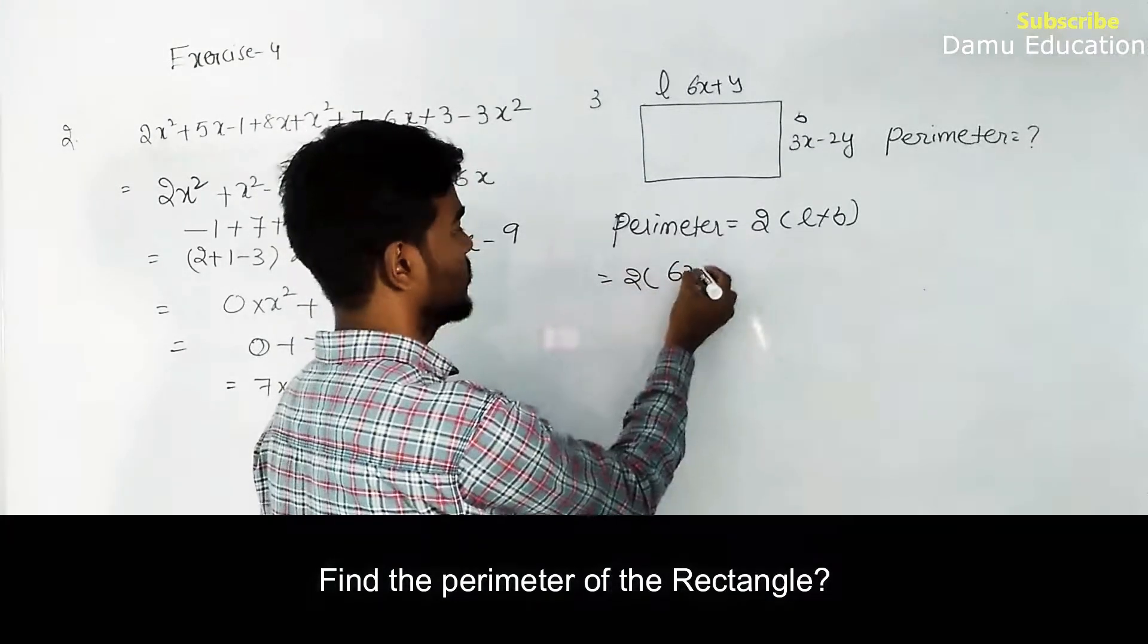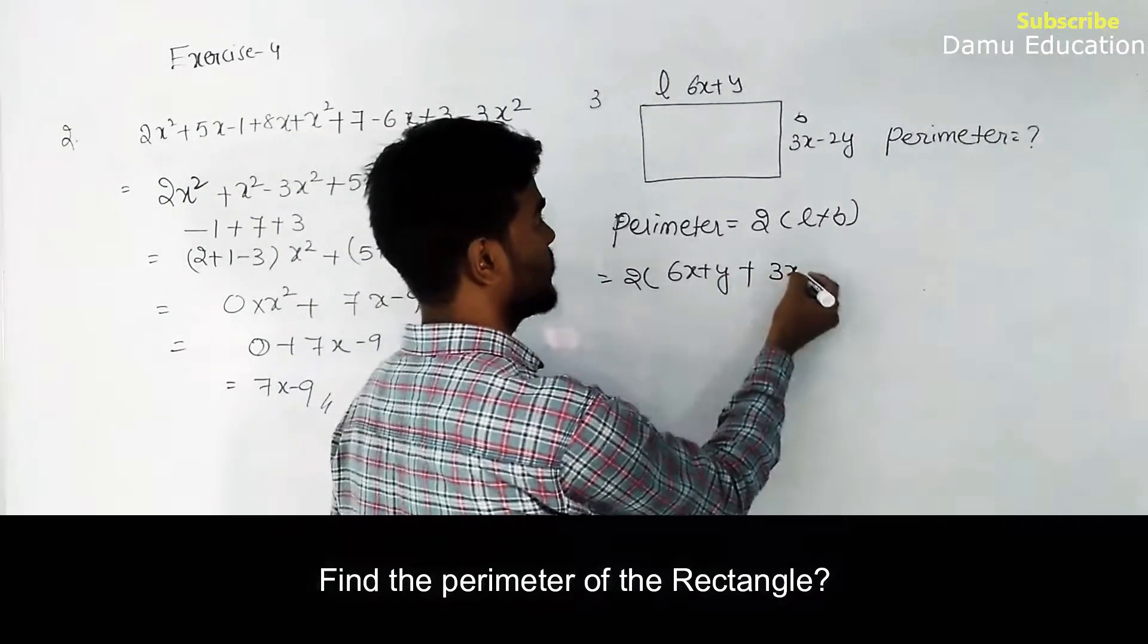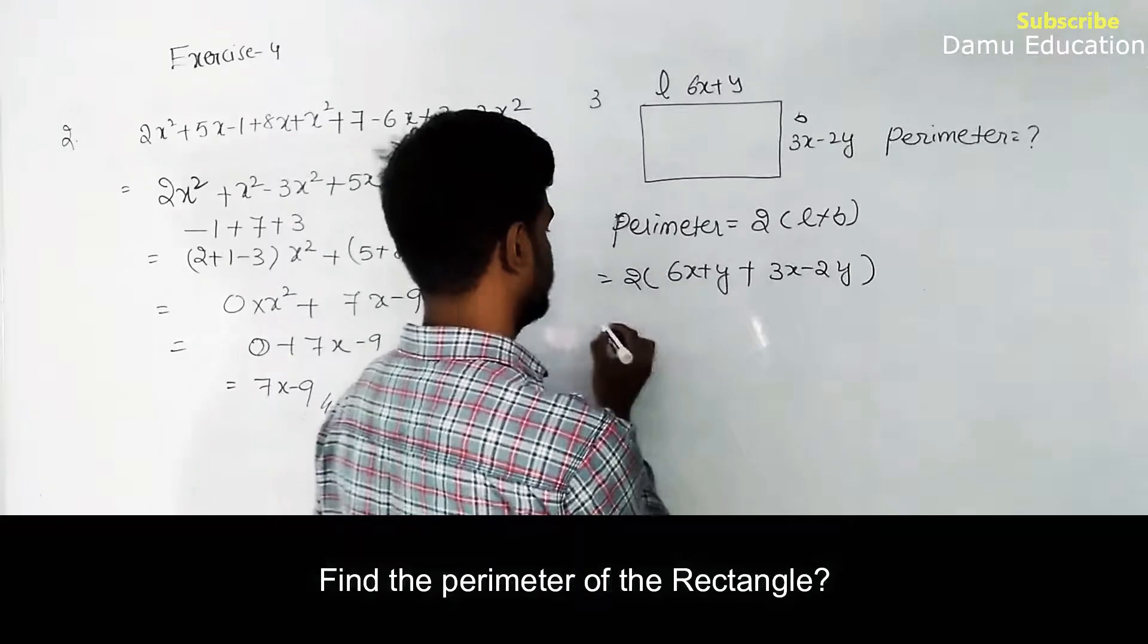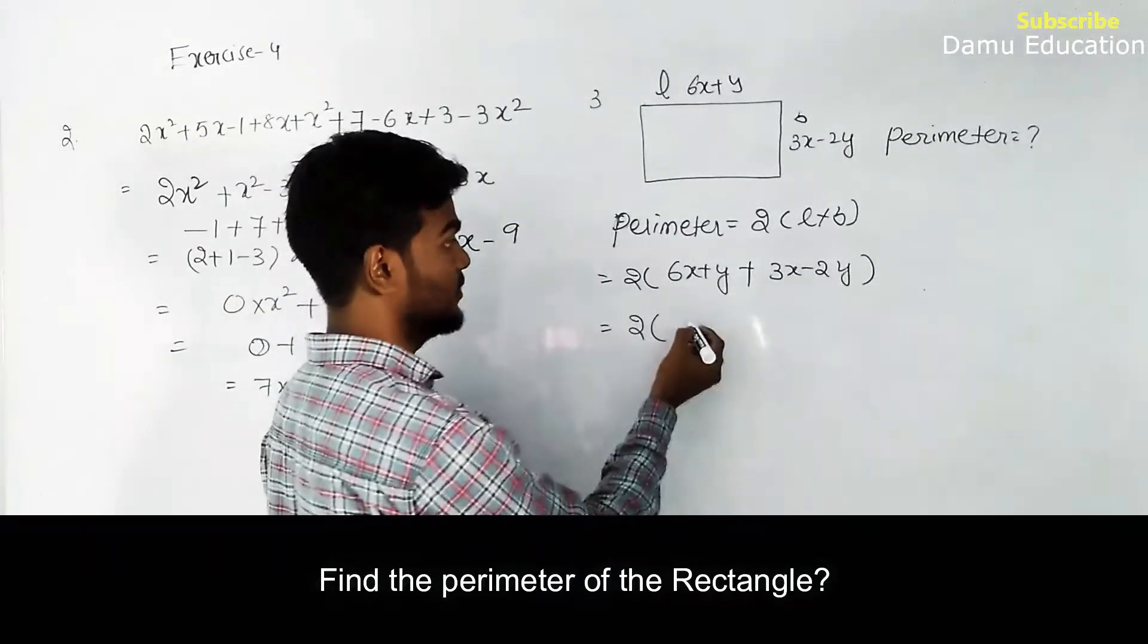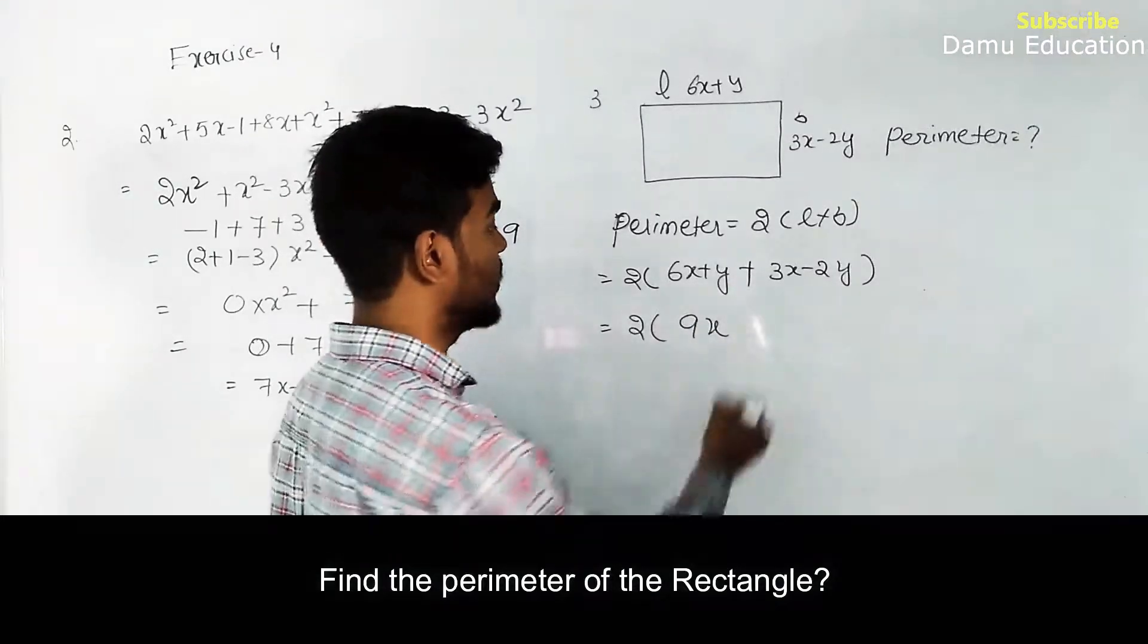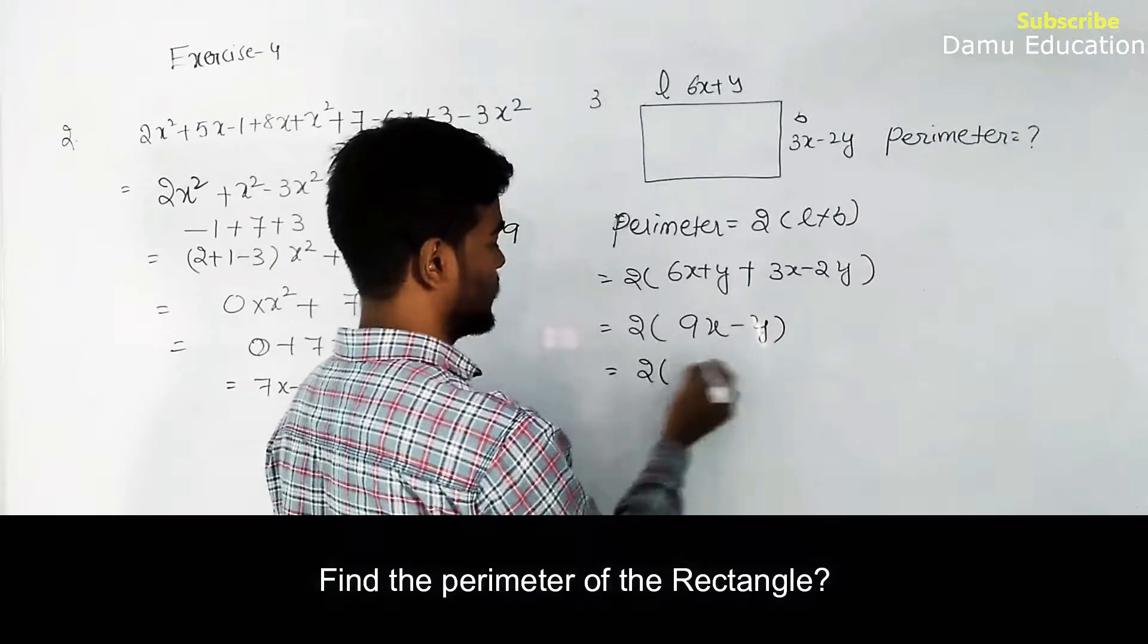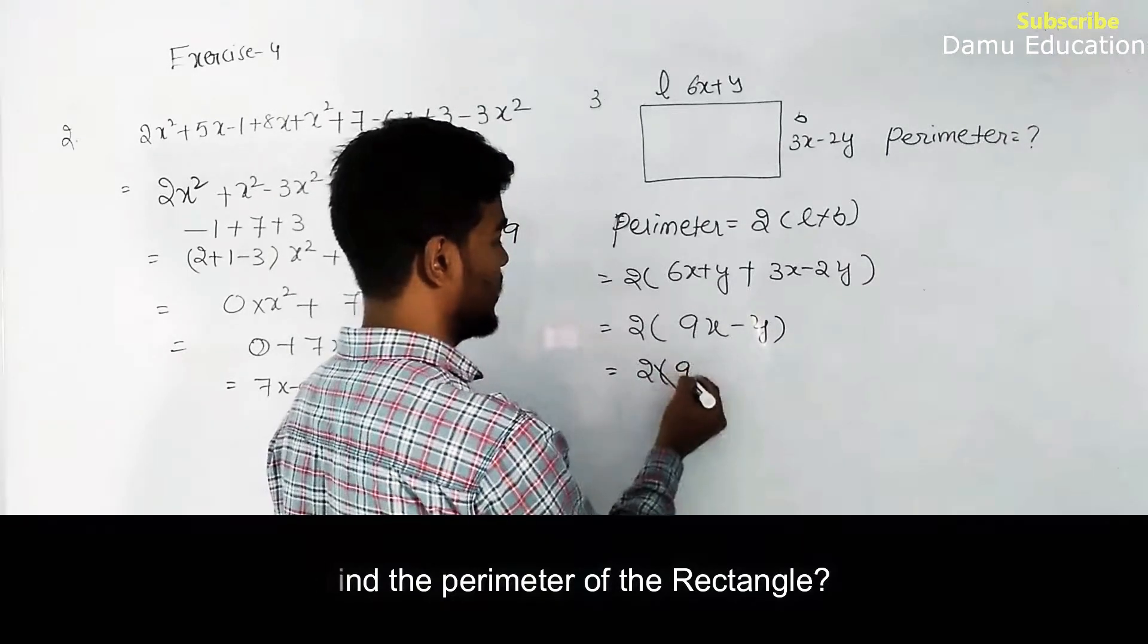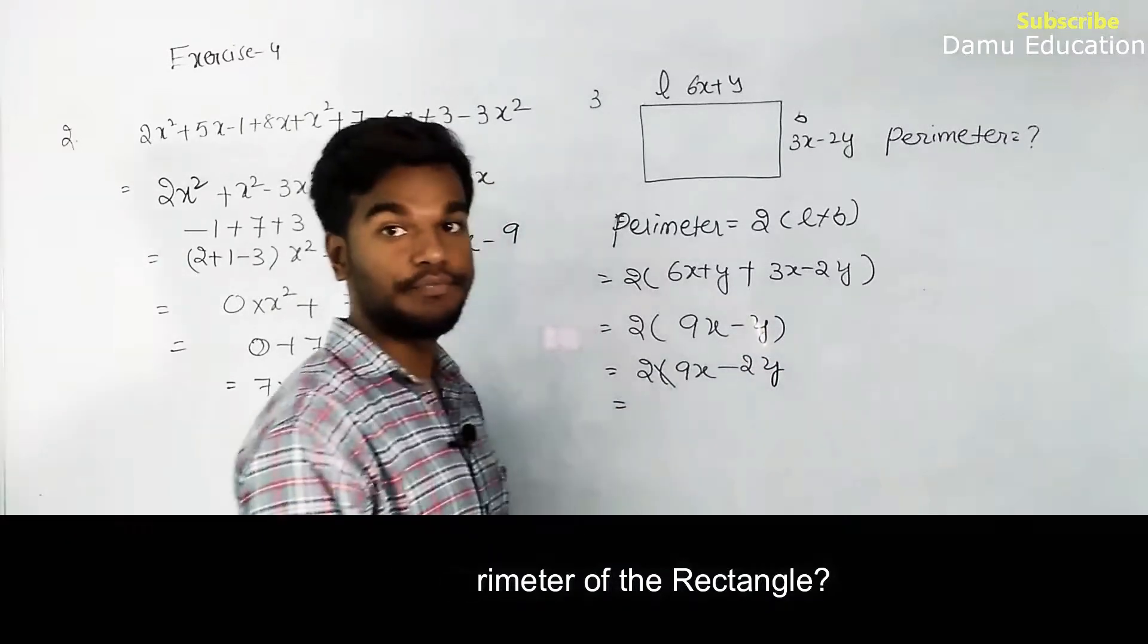So here 2 into, what is the length? 6x plus y, plus what is the breadth? 3x minus 2y. So 2 into 6x plus 3x is 9x, y minus 2y then it will become minus y.